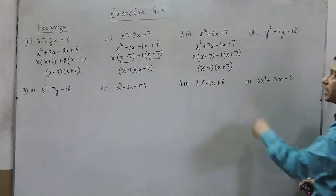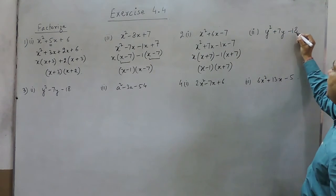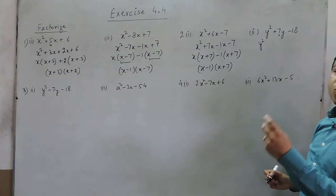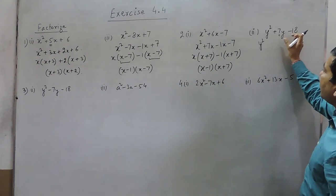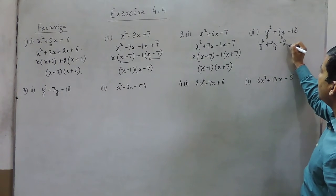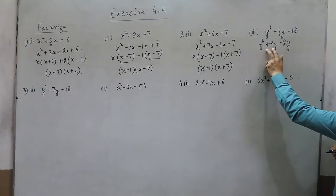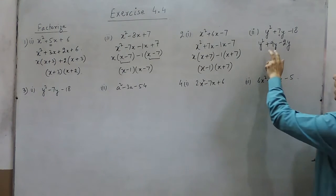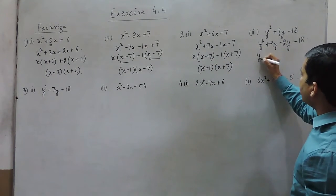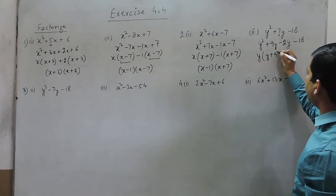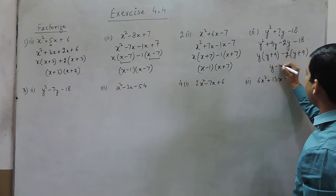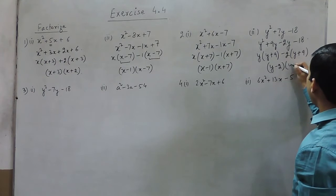In the second part of question 2, we have y squared plus 7y minus 18. We break 7 into two factors, 9 and 2, where the sum is 7 and the multiplication is minus 18. So we write plus 9y and minus 2y: 9 times minus 2 is minus 18, and 9 plus minus 2 is plus 7. Taking y common in the first two terms gives y plus 9, and taking minus 2 common in the last two terms also gives y plus 9. So the two factors are y minus 2 and y plus 9.